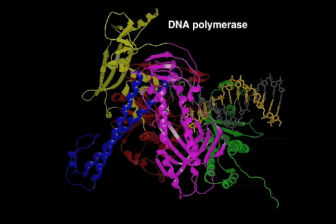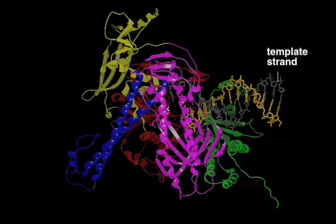DNA polymerase faithfully replicates DNA by using the nucleotide sequence of the template strand, colored gray, to select each new nucleotide to be added to the 3' end of a growing strand, colored yellow.